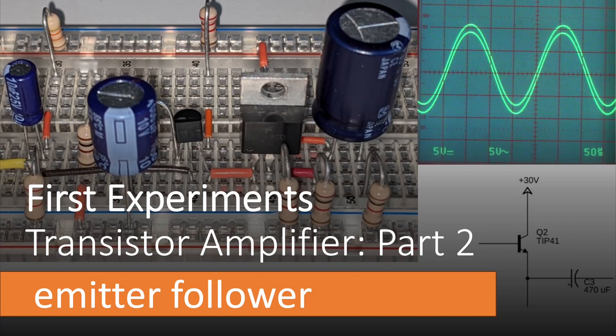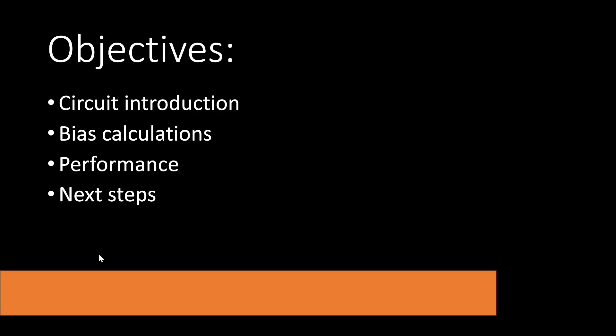Specifically we're going to look at the emitter follower, otherwise known as the common collector amplifier. We'll start with a brief circuit introduction, explore bias calculations, show the performance using a function generator and oscilloscope. Finally we'll explain some of the next steps you might want to take if you'd like to learn more about this amplifier.